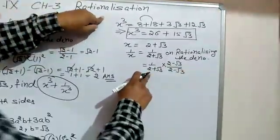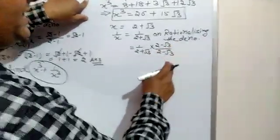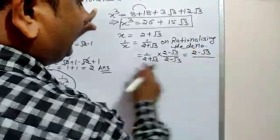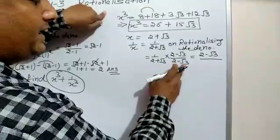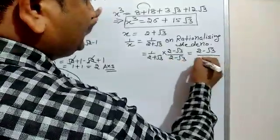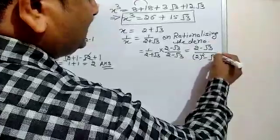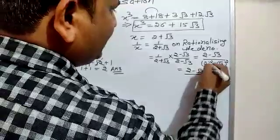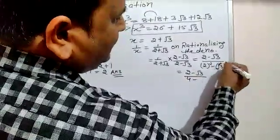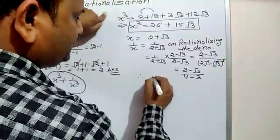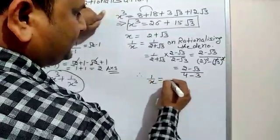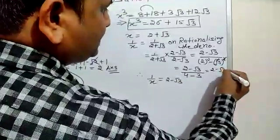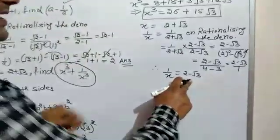Because our denominator is (2 + √3), we multiply and divide by (2 − √3). This equals (2 − √3) divided by (a + b)(a − b) = a² − b², that is 2² − (√3)². So (2 − √3) divided by (4 − 3): square root and square cancel, we are left with 3 in the denominator. Therefore 1/x = (2 − √3) upon 1, so 1/x = 2 − √3.